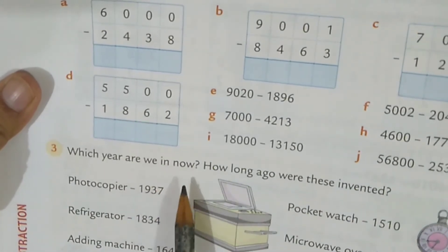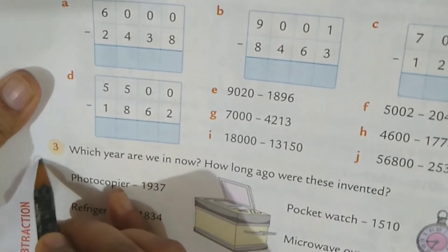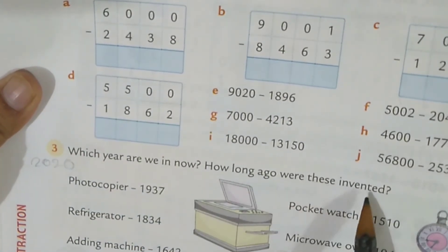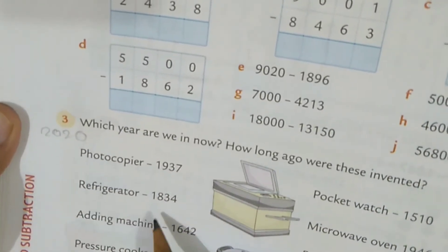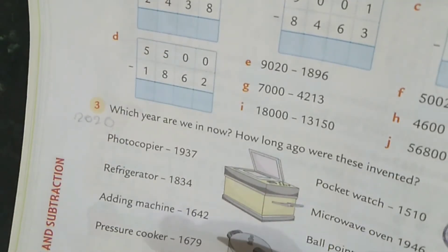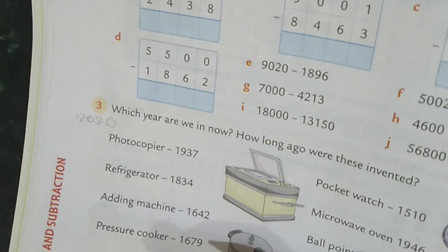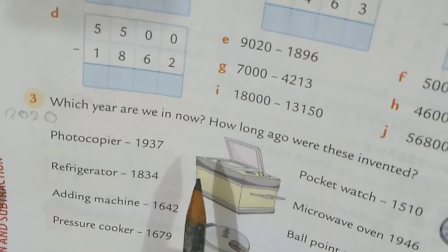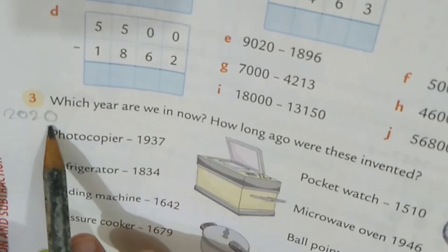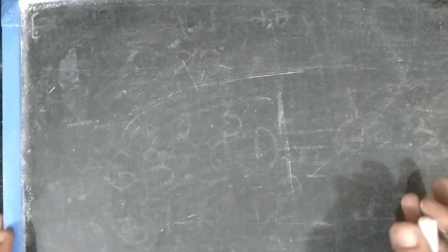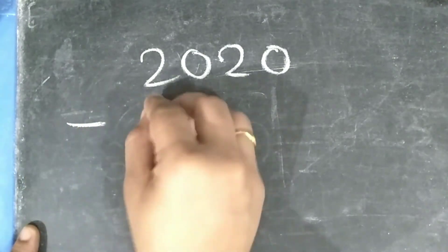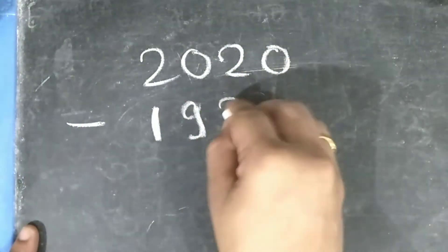Which year are we in now? Yes, it's 2020. How long ago were these invented? This means photocopier, refrigerator, adding machine. The year is given when each was invented, but how many years ago were they invented? That we have to find. It is very easy. You have to minus 1937 from 2020. I will solve this. So students, let's start.